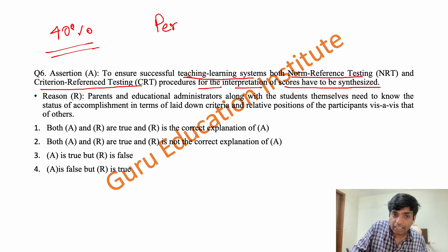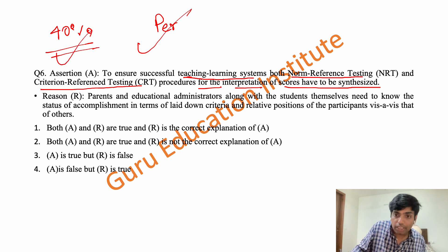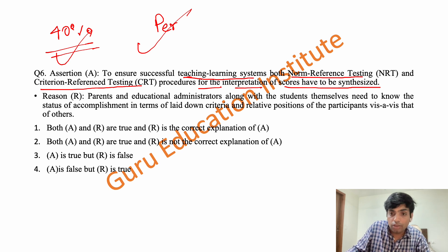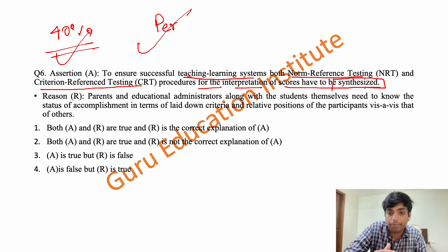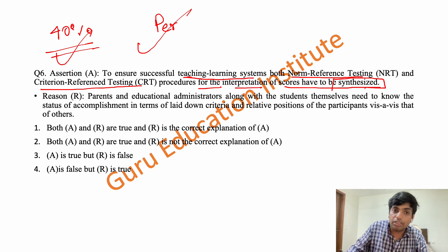So we are saying that criteria reference test and norm reference test — both tests — are based on steps. We need to correctly identify and interpret the scores, and understand both criteria reference and norm reference test scores.